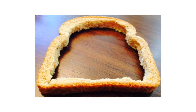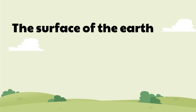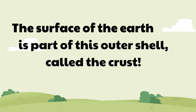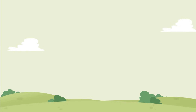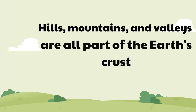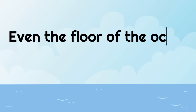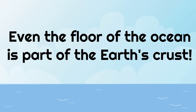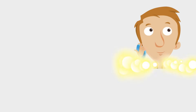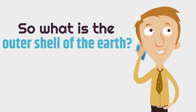Hopefully you enjoy bread crust — it's on the outside and it's really healthy! Okay, let's get back to the crust of the earth. The surface of the earth is part of this outer shell. That means hills, mountains, valleys, and even the floor of the ocean are all part of the earth's crust. So what is the outer shell of the earth? Yeah — the crust.